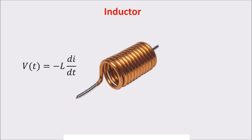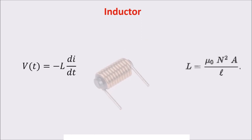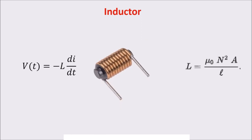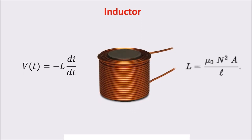The bigger L, the bigger the voltage induced. So L is the capacity of the device to induce a voltage. It depends on the permeability of the air, so if we want to raise L, we can raise the permeability by putting a piece of iron inside the coil, because iron has a bigger permeability than air. But the easiest way to raise the inductance L is to raise the number of turns of the coil, because there is a square relation.